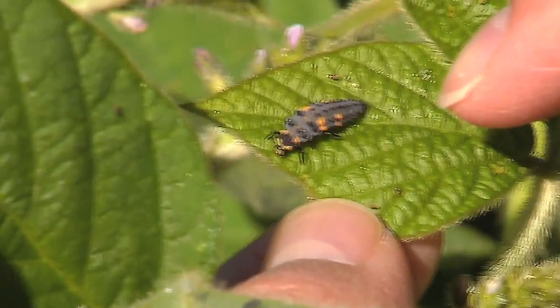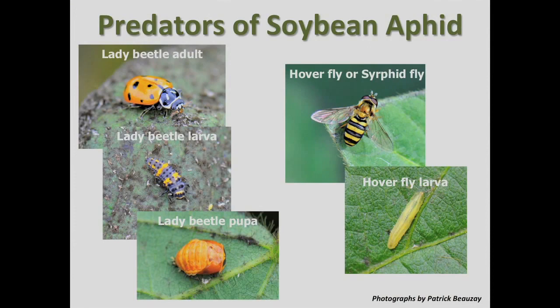Other predators of the soybean aphid, besides the lady beetle, include syrphid flies and larvae of the green and brown lacewings.